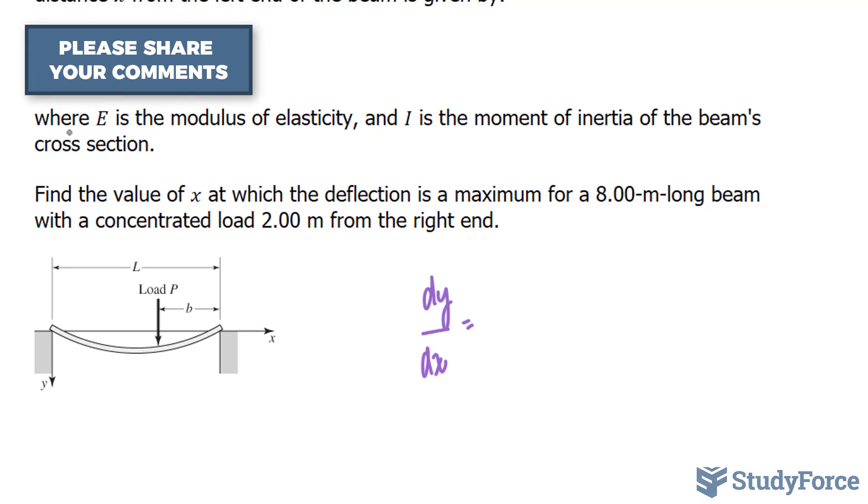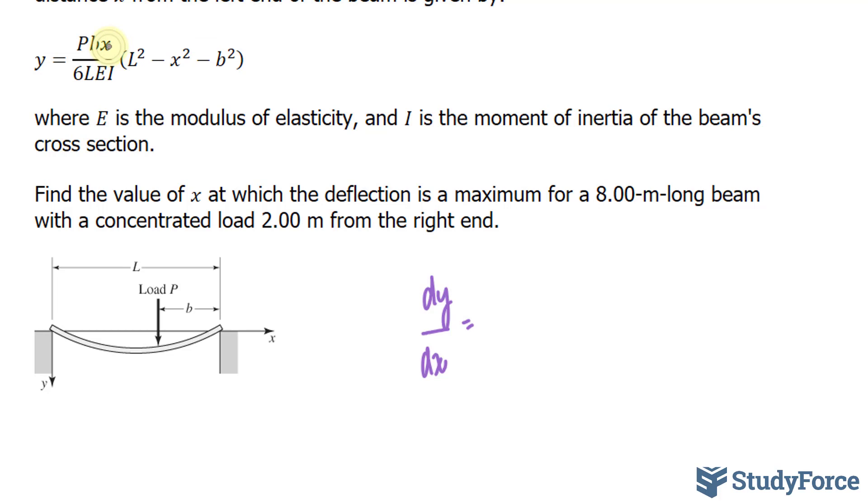The derivative of Pbx over 6LEI is equal to everything except for this x. Because remember, all of these letters are constants. Think of all those letters as being a fraction to x. If you take the derivative for example of 1/2x, you simply get 1/2. So the derivative of this is Pb over 6LEI. And we're going to leave this part the way it is, L squared minus x squared minus b squared.